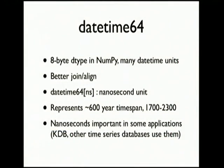The DateTime64 dtype is essentially just an int64 — an 8-byte integer that NumPy interprets as being of a particular unit: years, hours, minutes, nanoseconds, down to a very fine-grained resolution. Because of hardware limitations, depending on the unit, you can only represent a certain amount of time. One downside of going to nanoseconds is you can only represent about 600 years. It felt like a worthwhile trade-off since we probably don't care about nanoseconds prior to 1700. There are time series databases that provide nanosecond support, so binary compatibility in Python is fairly important.